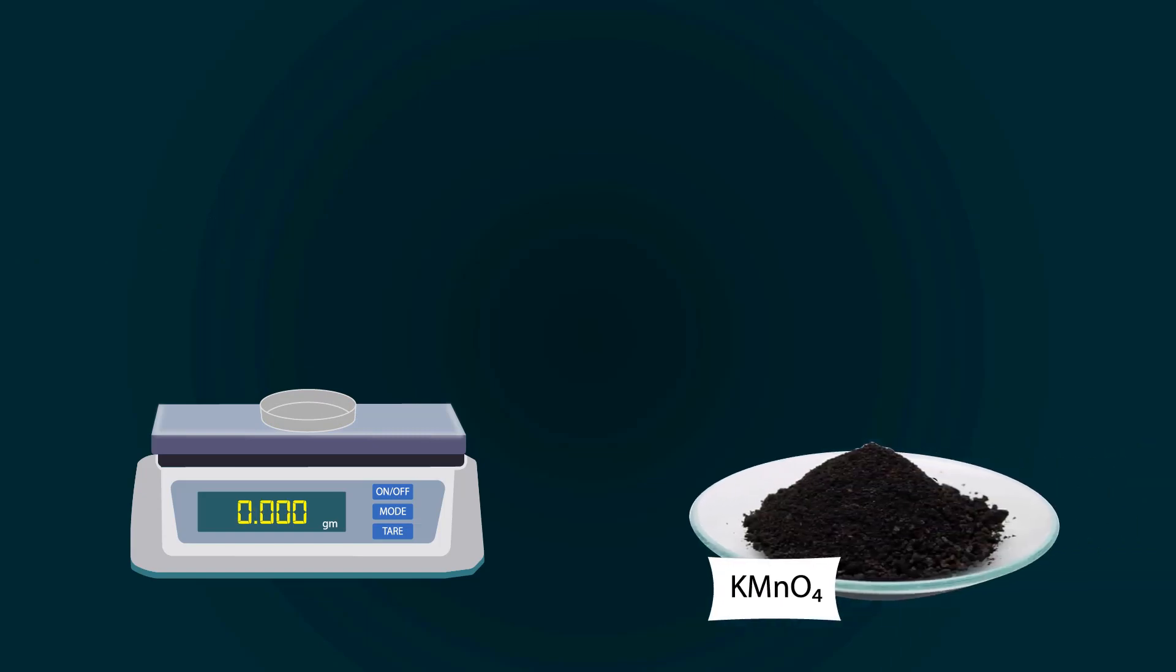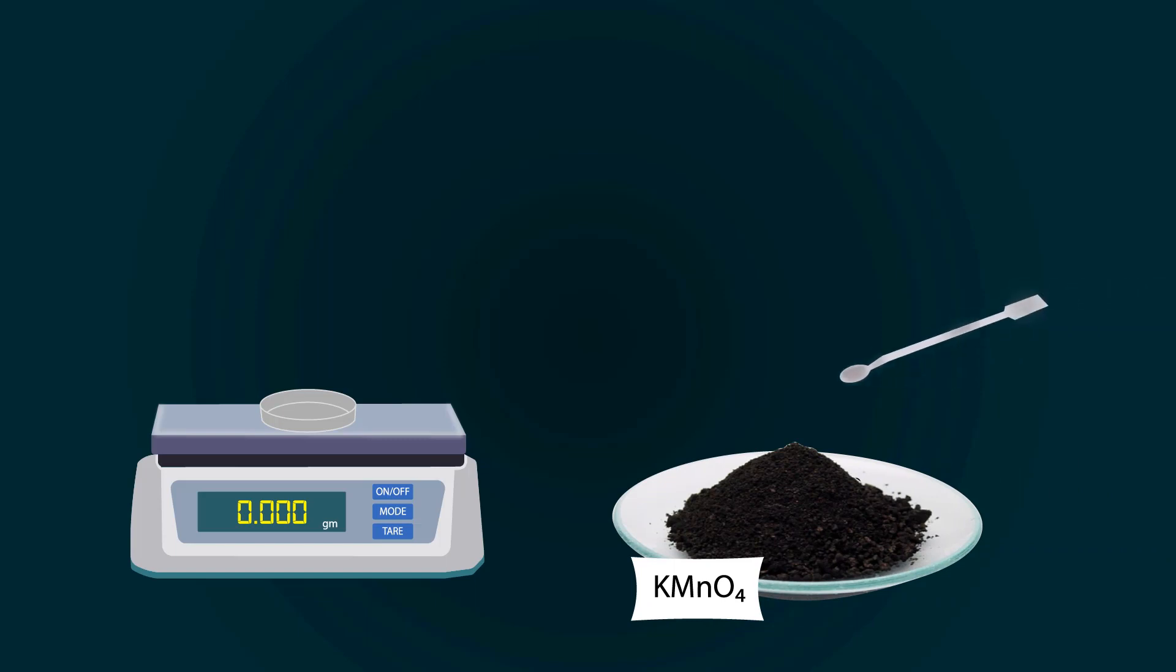First, take a weight balance and power it on. Now put the petri dish on it. Don't forget to tare it down. Now start adding potassium permanganate into the petri dish with the help of a spatula. Weigh precisely up to 7.9 grams.